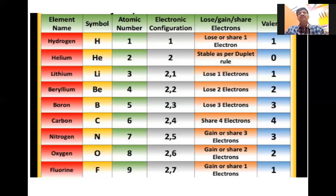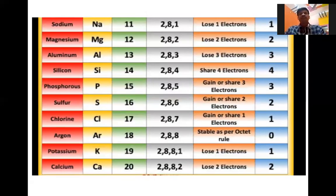Boron will lose 3 electrons, so valence is 3. Carbon — sharing of 4 electrons, so valence is 4. Nitrogen — gains 3 electrons, so valence is 3. Oxygen — gains 2 electrons. Fluorine — gains 1 electron, so valence is 1. Sodium — loses, so the valence is 1. Magnesium — valence is 2. Aluminium — 3. Silicon — sharing of 4 electrons, so valence is 4.